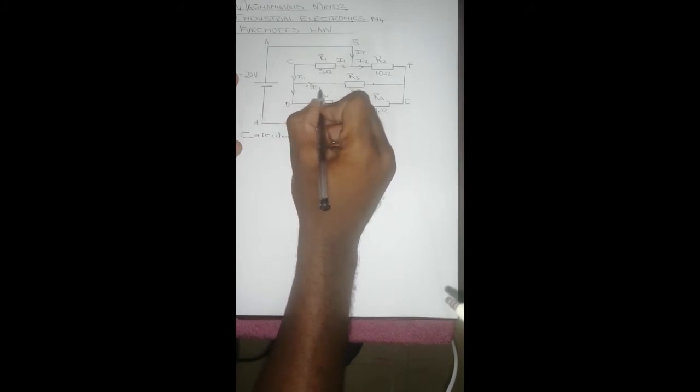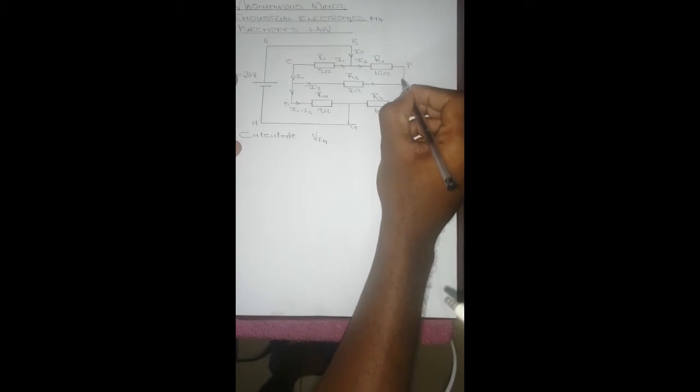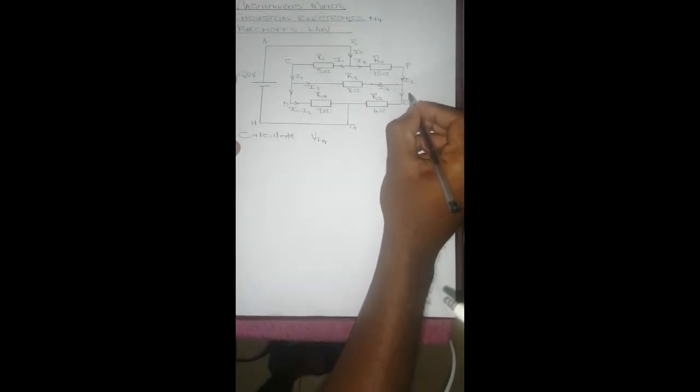When it gets here we'll have I1 and it's going to split to that branch and that branch. Let's call this I3. So this one is going to be I1 minus I3. And then here we've got I2 and I3 coming this way, so here we're going to have I2 plus I3.